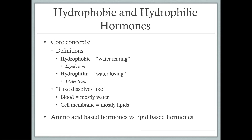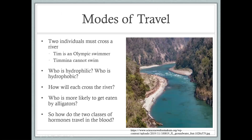So let's look at my actual analogy. Think of two individuals who must cross a river. We have Tim, who is an Olympic swimmer, and Tamina, who cannot swim. Take a moment and think about who is hydrophilic — who loves the water — and who is hydrophobic — who fears or hates the water. Well, obviously Tim, as the Olympic swimmer, is hydrophilic; he loves the water. And Tamina, being someone who cannot swim, is hydrophobic; she is going to hate the water.